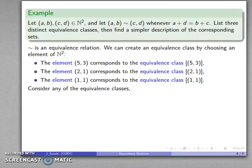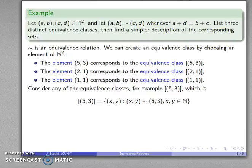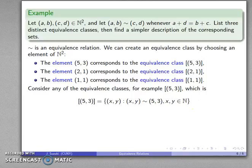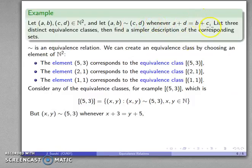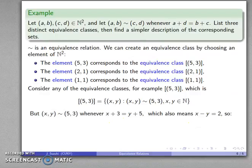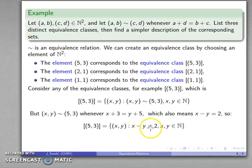Now let's consider any of those equivalence classes and find a simpler description of the corresponding sets. For example, take [(5, 3)]: this is the set of all (x, y) in ℕ² equivalent to (5, 3), meaning x plus 3 equals y plus 5. We can rewrite that as x minus y equals 2. So the equivalence class [(5, 3)] is the set of ordered pairs where the difference x minus y equals 2, with x and y in the set of natural numbers.